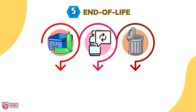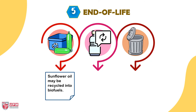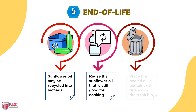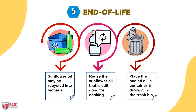The fifth and last stage is end of life. There are three methods: first, sunflower oil may be recycled into biofuels; second, reuse the sunflower oil that is still good for cooking; and third, place the cool oil in a container and throw it in the trash bin.